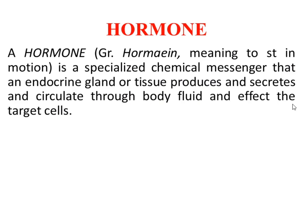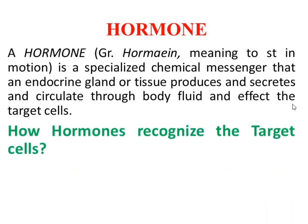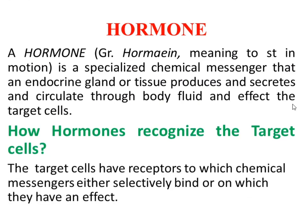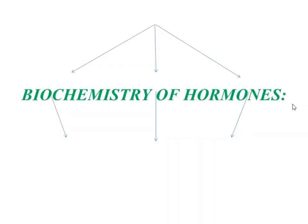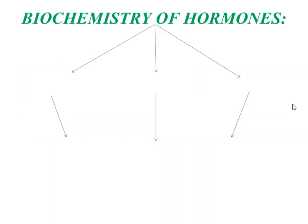How do the target cells recognize hormones? The target cells have specialized receptors to which chemical messengers selectively bind. These specialized receptors are only recognized by the specific hormone that is meant to bind to those target cells.